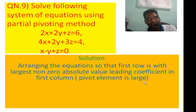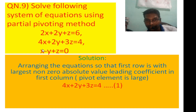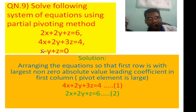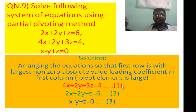We arrange the pivot element by placing the row with the largest leading coefficient first. After interchanging, the first equation becomes 4x plus 2y plus 3z equals 4. We then divide rows and update accordingly to perform forward elimination.